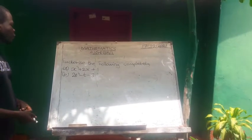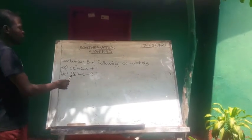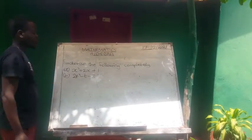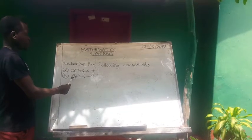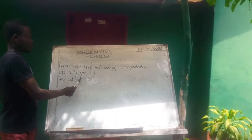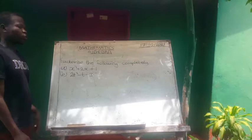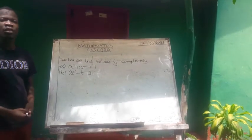Part A, x squared plus 2x plus 1. Part B, 2t squared minus t minus 3. So these are quadratic expressions.